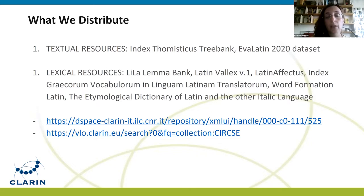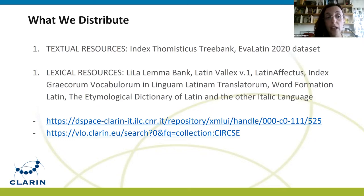Among the textual resources, we distribute the dataset created for the evaluation campaign EvaLatin 2020, containing texts manually annotated with part-of-speech tags and lemmas, and also a treebank containing syntactic information. For the lexical resources, we distribute a collection of lemmas with grammatical and morphological information called the Lemma Bank; a valency lexicon called Latin Valix; a prior polarity sentiment lexicon called Latin Affectus; a list of Latin loans from Ancient Greek; a collection of Proto-Italic and Proto-European reconstructed forms; and a database of Latin derivational morphology called Word Formation Latin.